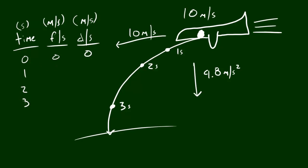At time one, two, and three, let's go ahead and figure out those. So at one second, which is this one right here, the watermelon is moving forward at 10 meters per second. However, it's moving downward at 9.8 meters per second.